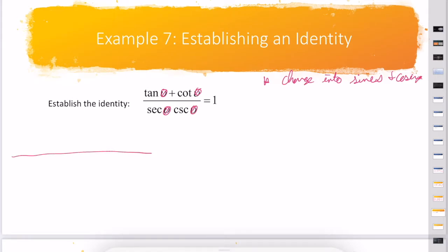If I have tangent of θ, that becomes sin θ over cos θ, and cotangent of θ is cos θ over sin θ.